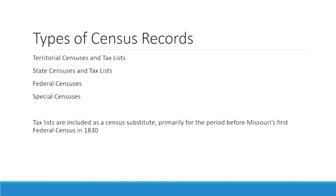The types of census records available for Missouri that we're going to talk about tonight are territorial censuses, state censuses, federal censuses, and special censuses. We include tax lists when talking about territorial and state censuses because they are an amazing census substitute. Primarily for the period before Missouri's first federal census in 1830, they are very important because there are many areas that don't have any censuses taken until 1830. So tax lists are a really good way to place someone in a location at a specific time period.